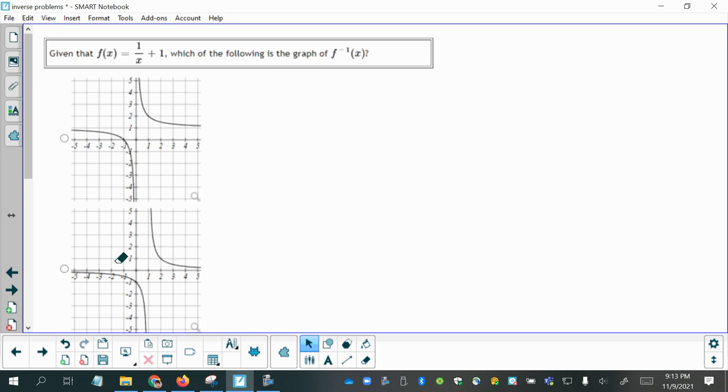First of all, inverse functions have this relationship that they look similarly shaped, and the inverse function looks like the graph of f of x reflected across the y equals x line, the identity function.